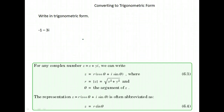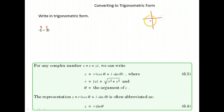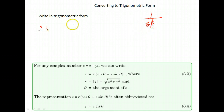This time we want to write negative 1 minus 3i in trigonometric form. In this number, the x value is negative 1 and the y value is negative 3. We graph it to know which quadrant we're in — both negative means we go negative 1 and down 3, so we're working in quadrant 3, which will be important when finding theta.